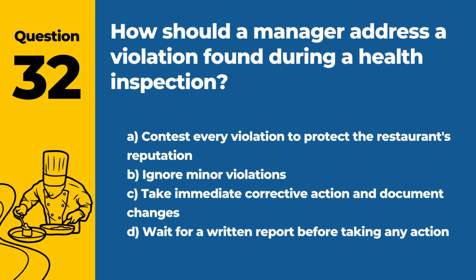Question 32: How should a manager address a violation found during a health inspection? a. Contest every violation to protect the restaurant's reputation. b. Ignore minor violations. c. Take immediate corrective action and document changes. d. Wait for a written report before taking any action. Answer: c. A manager should address violations found during a health inspection by taking immediate corrective action to rectify the issues and documenting these changes for future reference and compliance.